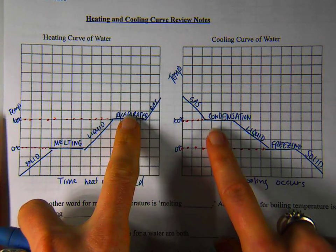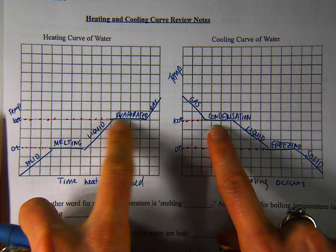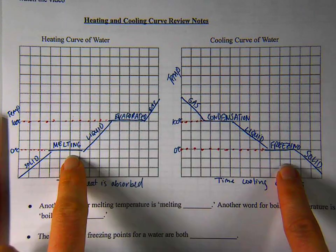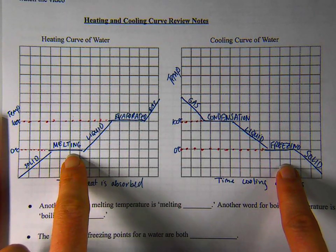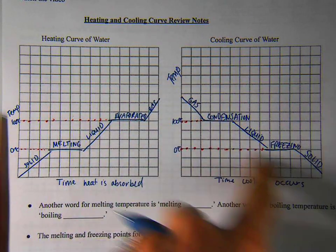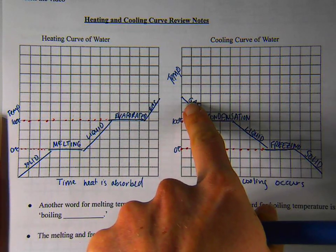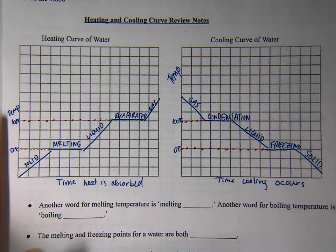These temperatures should look really familiar to each other. So condensation and evaporation, they're at the same temperature for water. Freezing and melting, they're at the same temperature. It just depends on whether we're cooling it down or increasing the heat and heating it up as to what we call it.